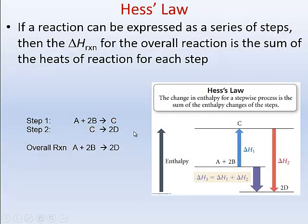We can cross out the C's in this reaction because C was formed in step one and then C was a reactant in the next reaction — it was formed and then consumed in the next step. You can do this throughout any steps in a reaction to show that the reactants you start with and the products you end with are the same as the overall reaction, and anything made in one step that reacts in a later step cancels out.